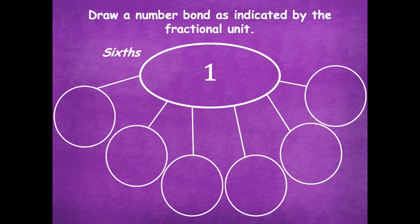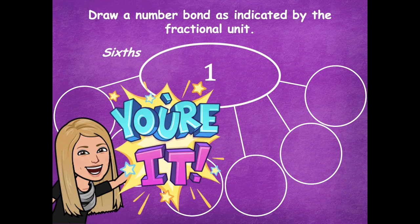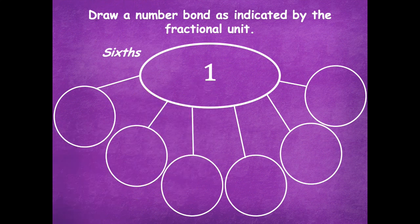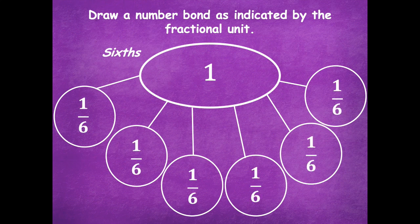Let's look at another one. Here is our number bond — you're going to draw your own number bond as indicated by the fractional unit, which happens to be sixths. Go ahead and label the unit fractions that represent one whole using the fractional unit of sixths. Pause the video and click play when you're ready. All right — here we have one sixth all the way around, so we have six one-sixths to represent one.